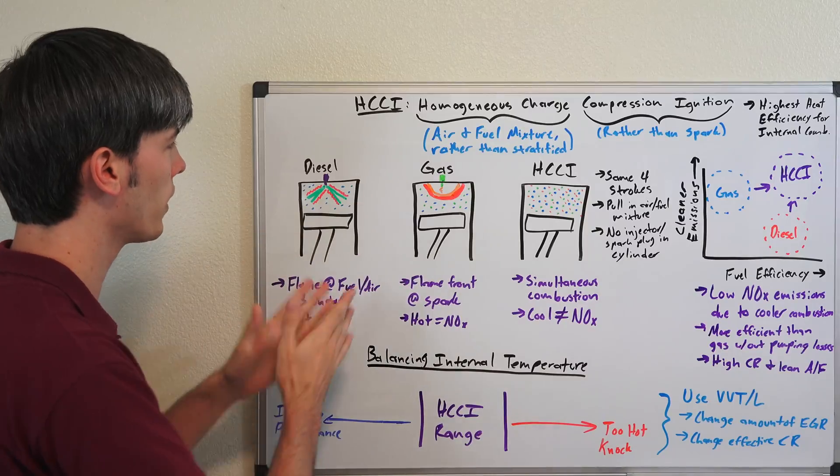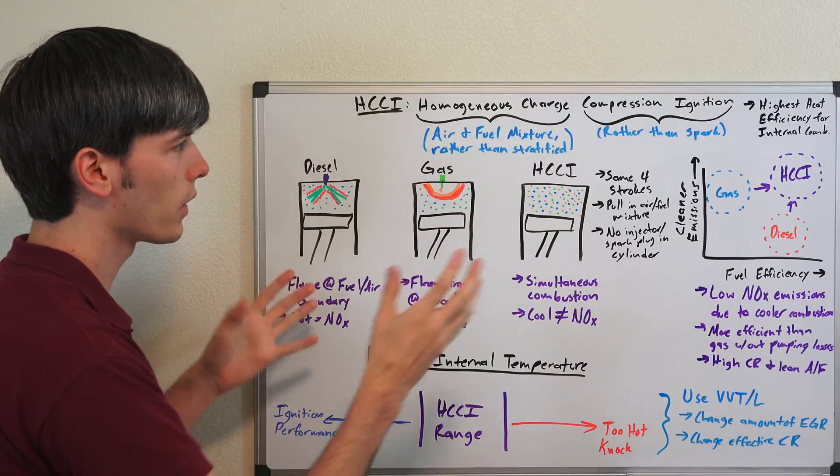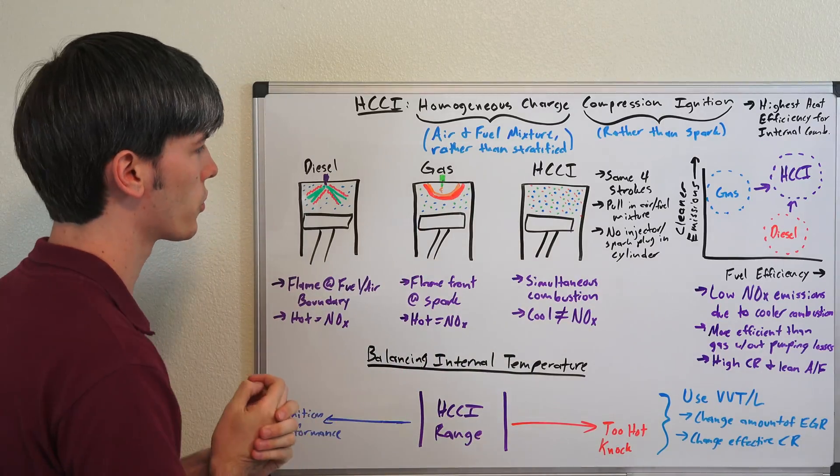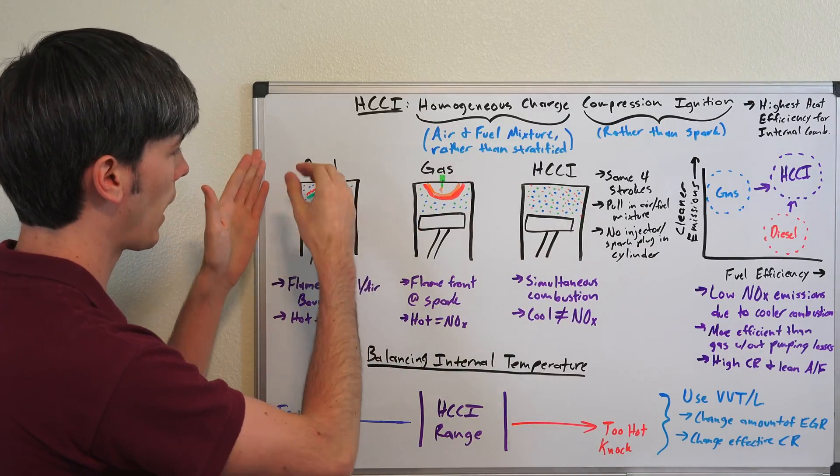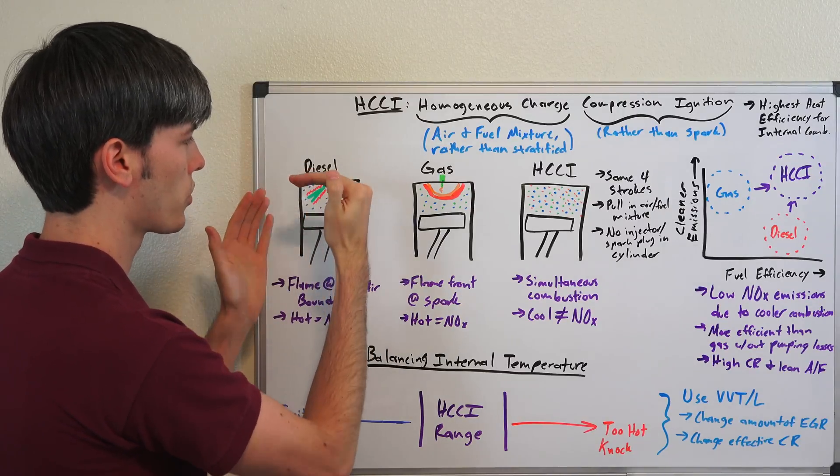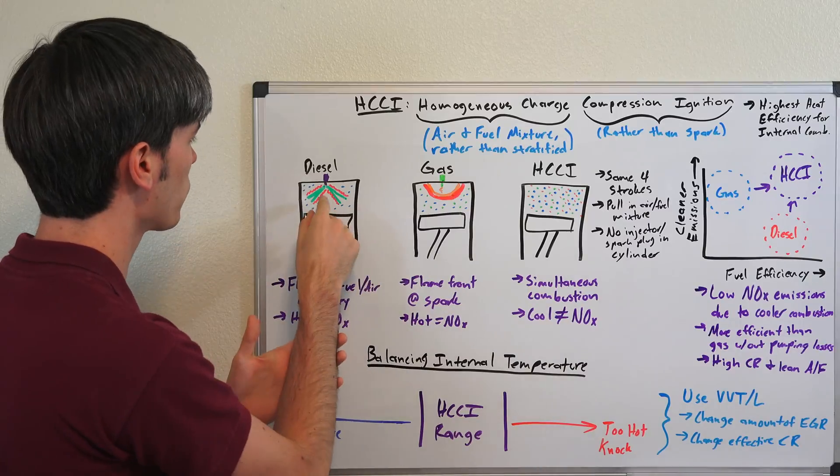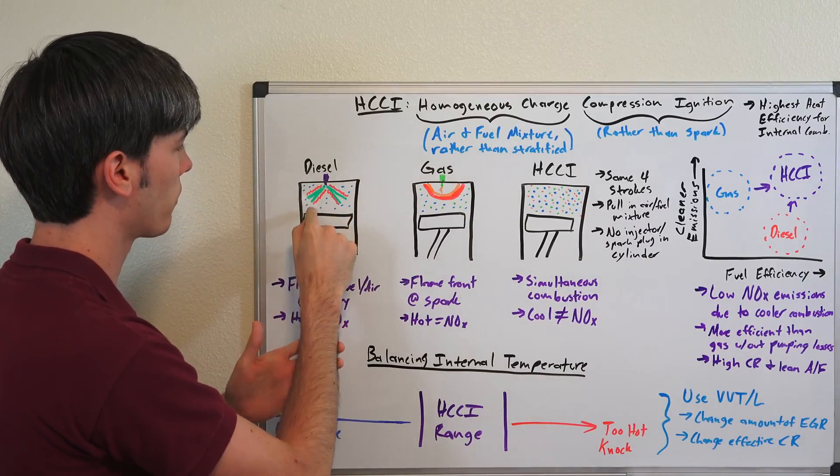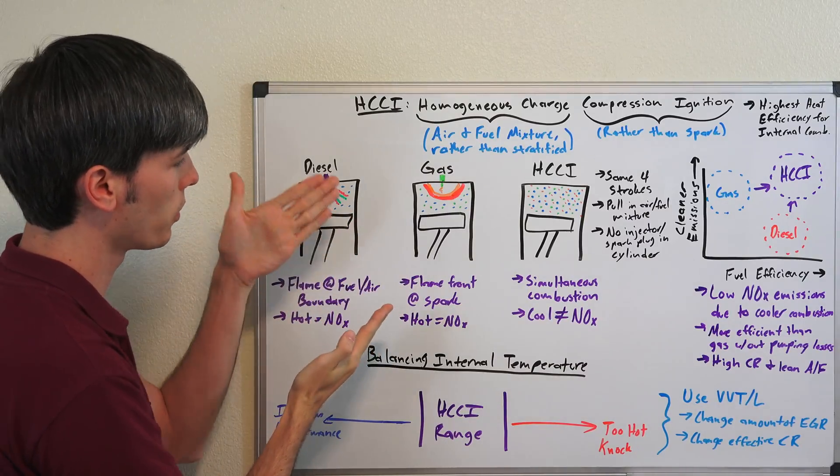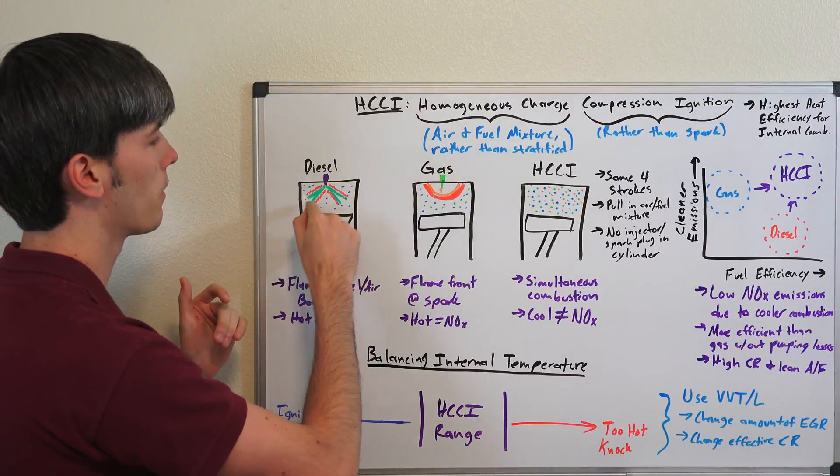So looking at the differences between a diesel, a gas and an HCCI engine, very similar. You do have the same four strokes, but with a diesel you're going to have that air pulled in and then you're going to spray the fuel in right before to start your ignition event. So injecting the fuel is what ignites that mixture and you're of course going to have that flame front on the boundary between the fuel which has been injected in and the air touching it. So you'll have that hot flame front there.